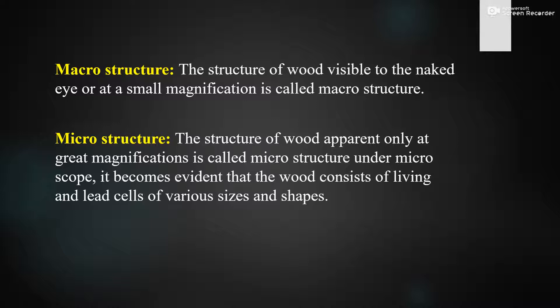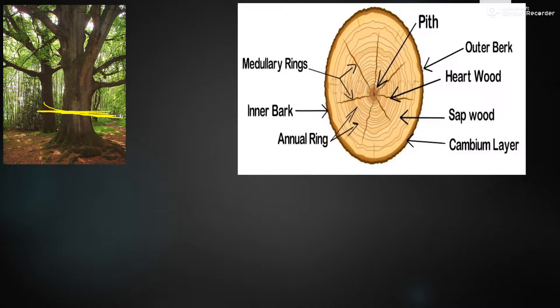Moving on to the structure of a tree — how it looks. If we cut a tree and look at that structure, the cross section, it will look like this. So this is the cross section of the tree. Just like with buildings, if you want to know the cross section of a wall to see what materials are used in it, like that, if we cut the tree, these things are there on the tree.